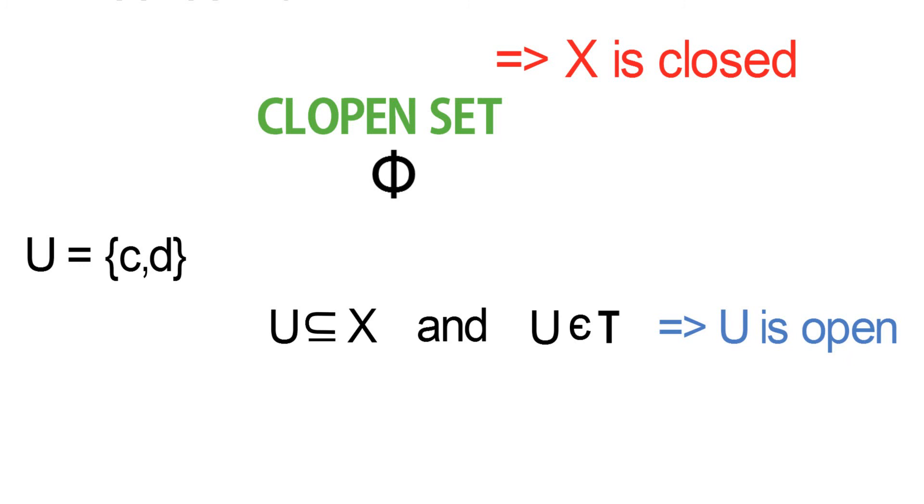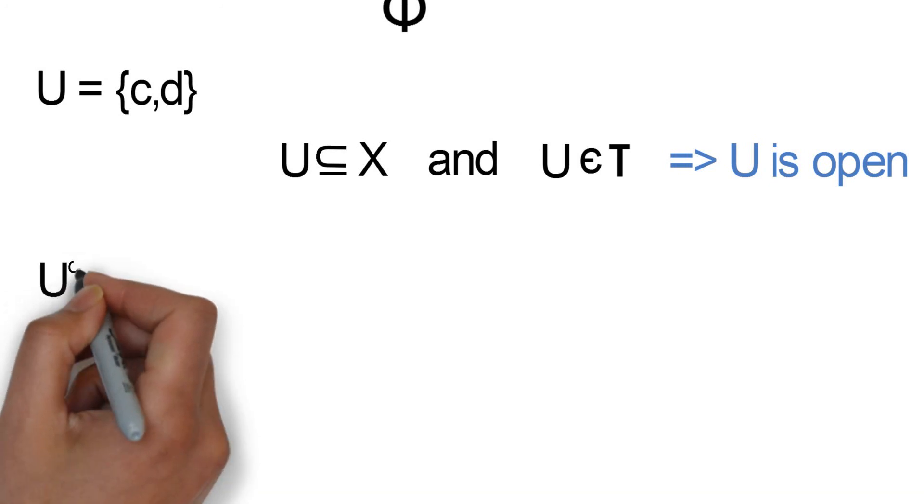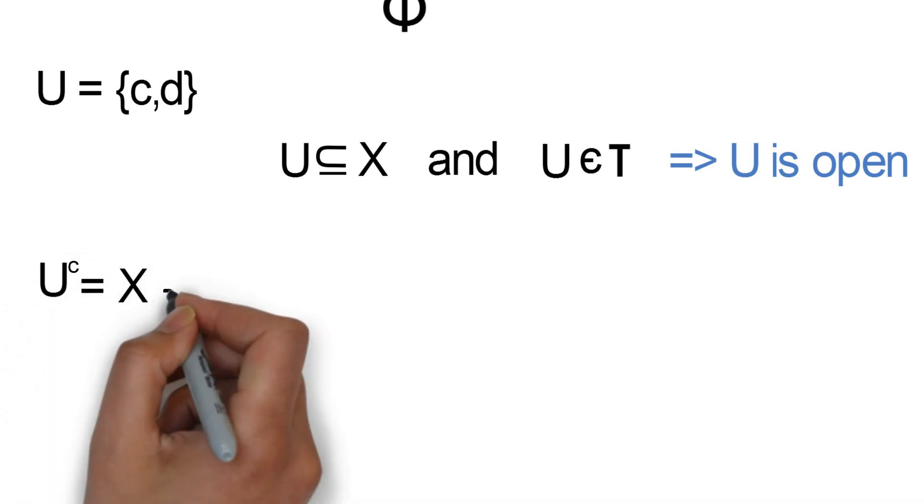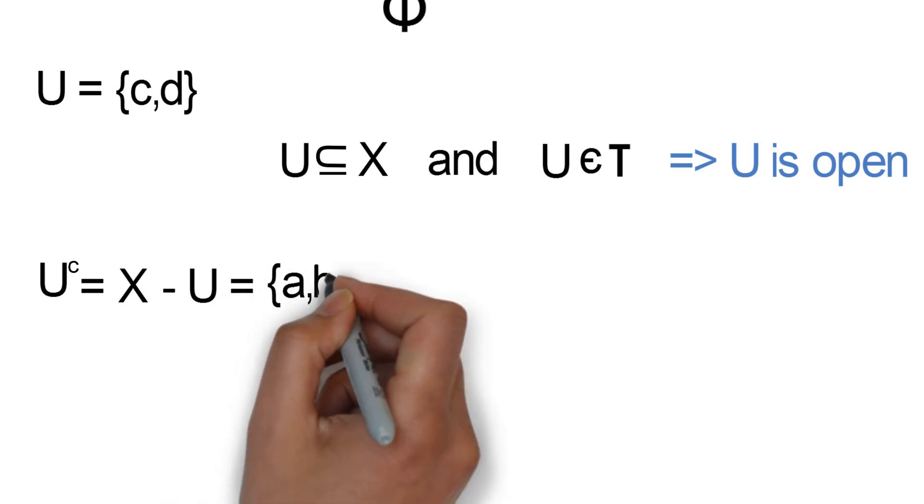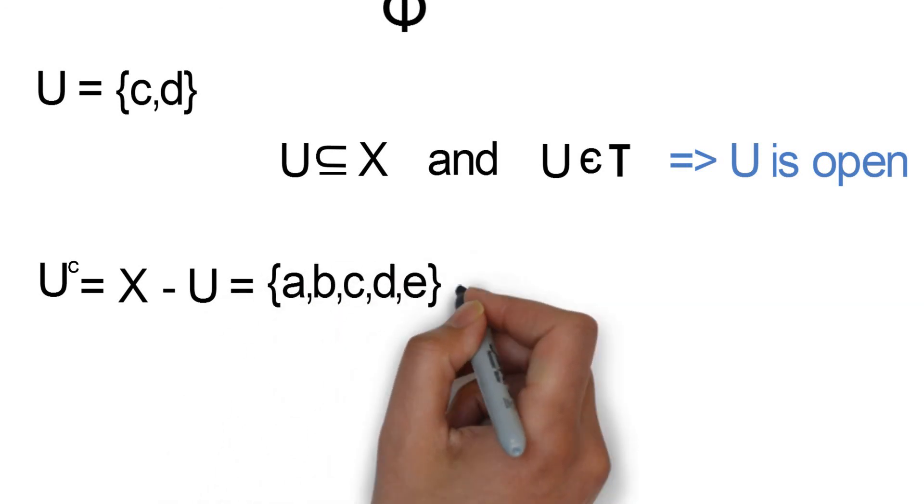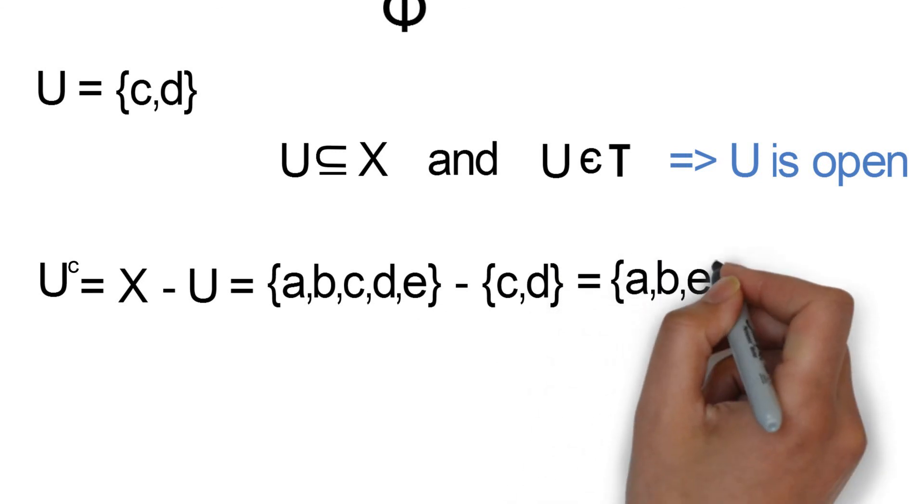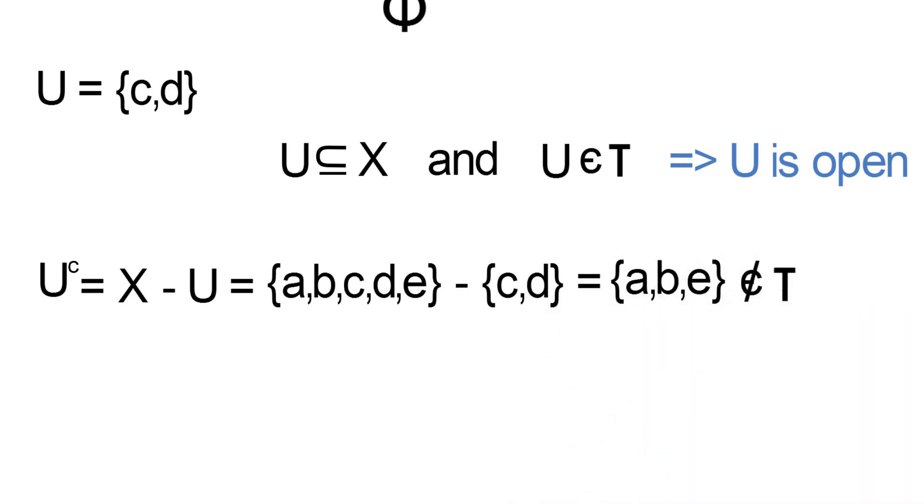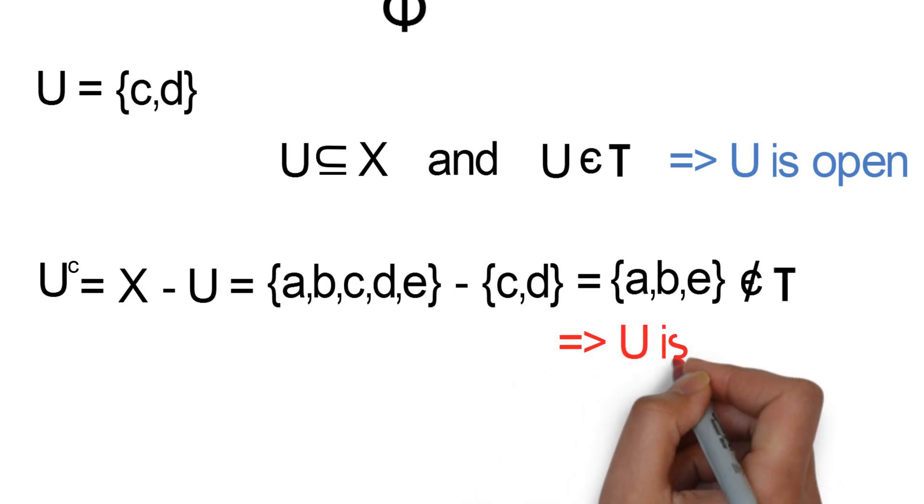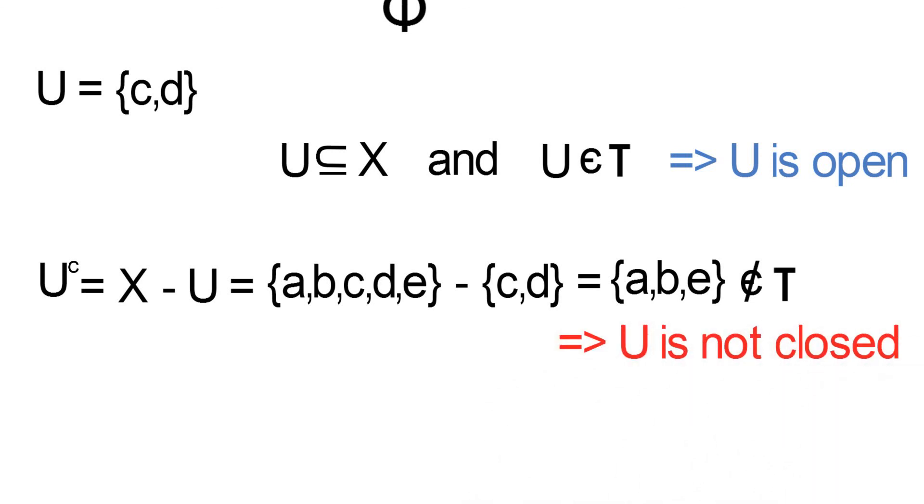Now let's see if it is also closed or not. We simply look for U complement. U^c is equal to X minus U, which is equal to the elements of X minus the elements of U, which is equal to {a, b, e}, which is not a member of τ. And this implies that U is not closed. So feel free to play around with any subset of X to see if they will be open or closed.